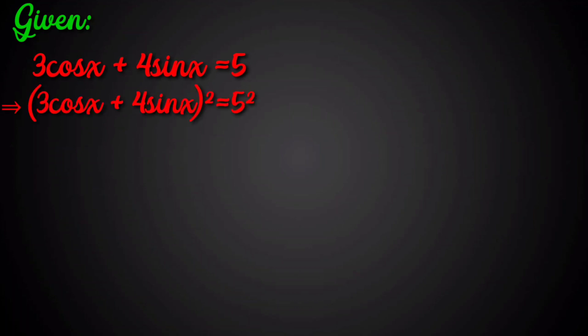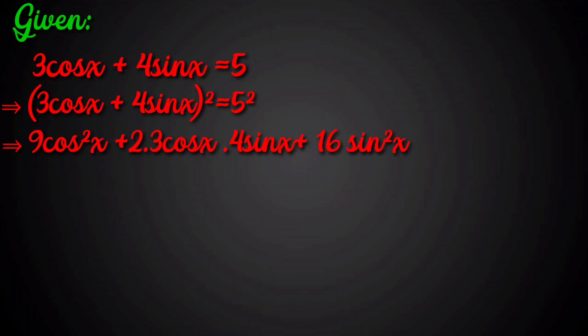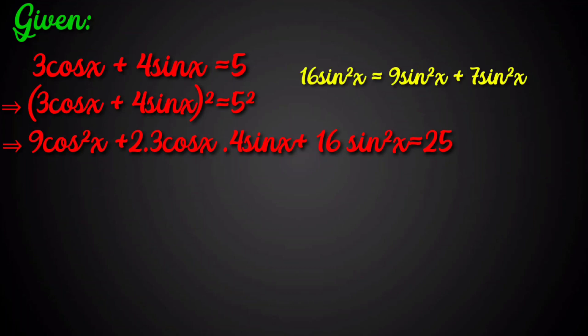(3cos(x) + 4sin(x))² = 5², which implies 9cos²(x) + 2·3cos(x)·4sin(x) + 16sin²(x) = 25. Then 16sin²(x) can be written as 9sin²(x) + 7sin²(x).